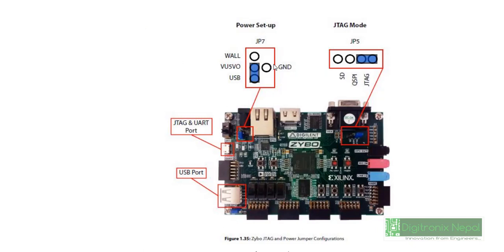For the Zybo board, we need to set up the power jumper JP7. When programming and powering the Zybo via USB, we take power from the USB and program via USB. If you want to program with a power adapter, set the jumper to the always-on position. The JTAG and UART share a single port — this one port works for both JTAG programming and UART. We can program the bitstream to the Zynq and even program our SDK project from this same port using one USB cable.